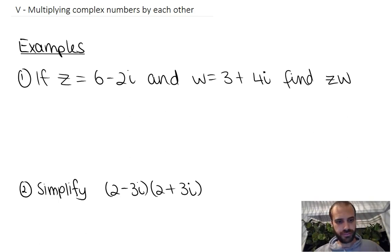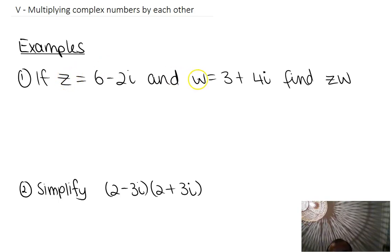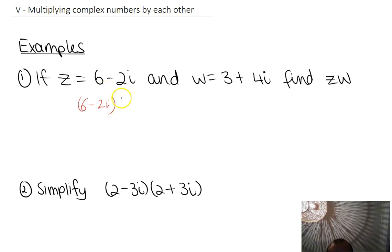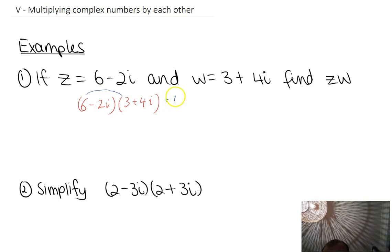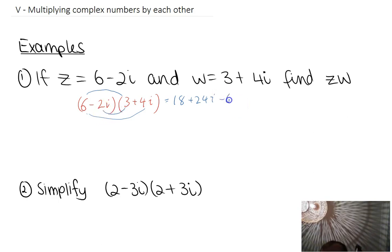So if I'm going to do z times w, it's going to be 6 minus 2i multiplied by 3 plus 4i. It's a bracket times a bracket, so I'm going to use the FOIL method. 6 times 3 is 18. 6 times 4i is 24i. Negative 2i times 3 is negative 6i.